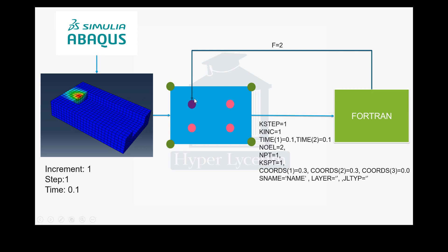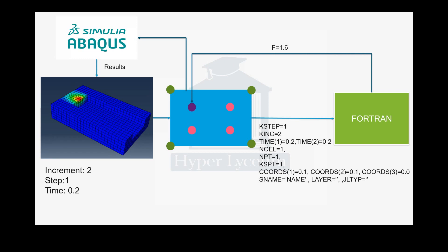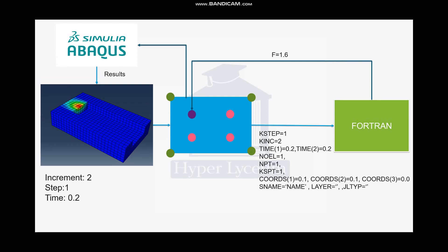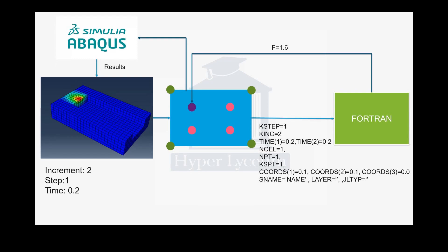After finishing the first element, Abacus moves to the second element, again starting with its first integration point. As you can see, for the second element's first integration point, it sends the new coordinates to the Fortran code, which processes the data and returns the value. After doing this for all integration points, Abacus goes to the third element, then all remaining elements.